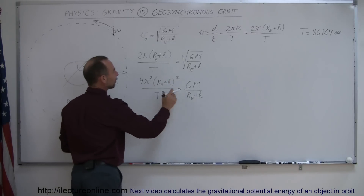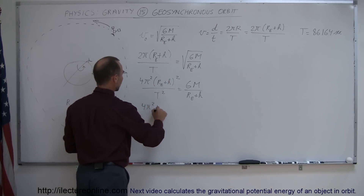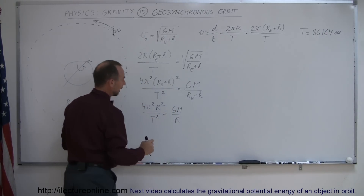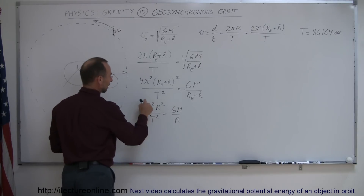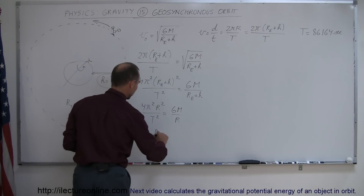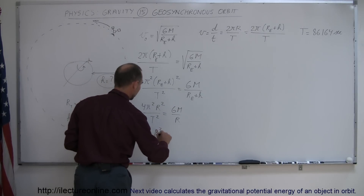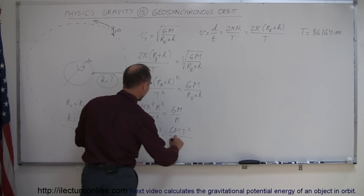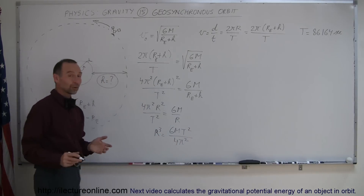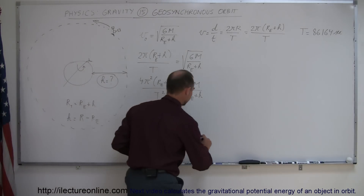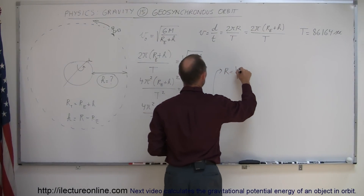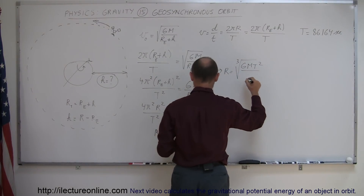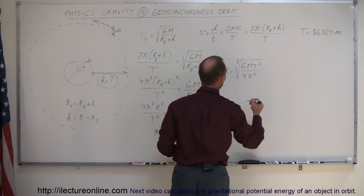Replacing (r_e + h) with r, we have 4π²r² over T² equals GM over r. Rearranging — moving r to the left, T² to the right, and dividing by 4π² — we get r³ equals GMT² divided by 4π². Finally, to find r, we take the cube root of both sides: r equals the cube root of (GMT² divided by 4π²).